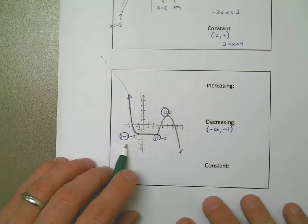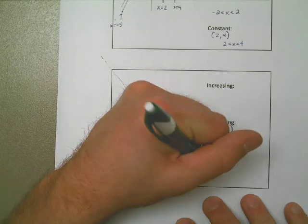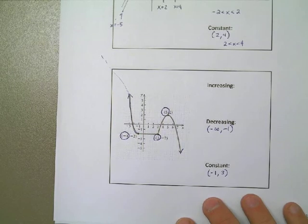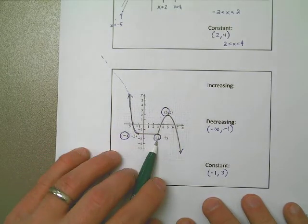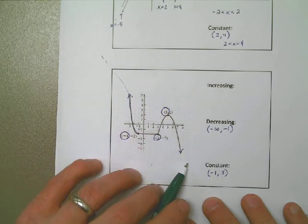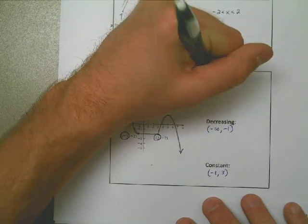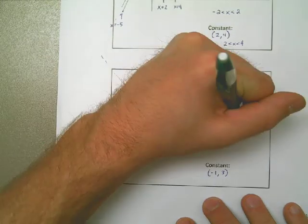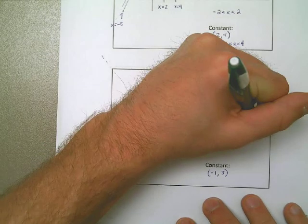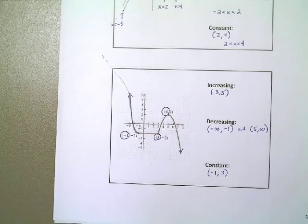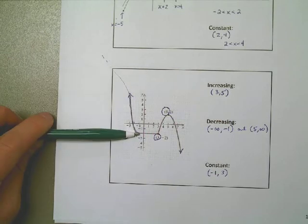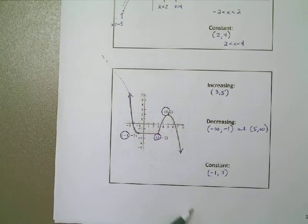Then I have this section in the middle that goes from negative 1 to the x-coordinate of 3, where the graph doesn't go up or down — so it's constant. Then it looks like a parabola off to the end: from 3 to 5 it goes up, so it's increasing. And from 5 onward it goes down — decreasing. So I add an extra section to the decreasing area: not only from negative infinity to negative 1, but also from 5 onward as that graph continues.